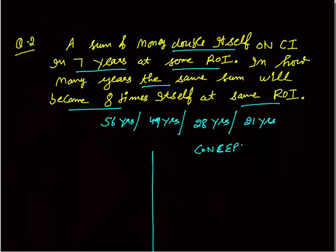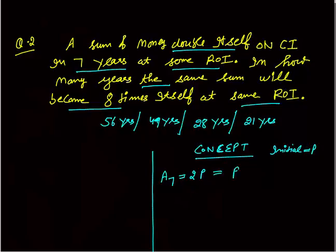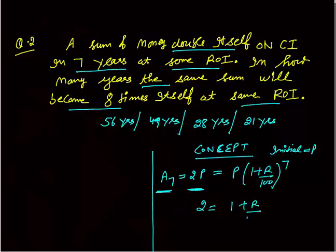Using the concept method: the amount doubles in 7 years, so if the initial principal was P, then A7 = 2P. Using the compound interest formula: 2P = P × (1 + R/100)^7, so we get 2 = (1 + R/100)^7.